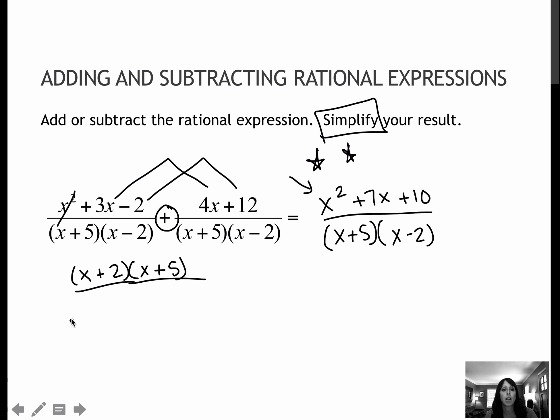Over the denominator I already had, which is x plus 5, x minus 2. And then my x plus 5s will cancel, which leaves me just with x plus 2 over x minus 2. Again, my xs won't cancel, my 2s won't cancel. This is as far as I can go.